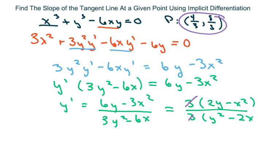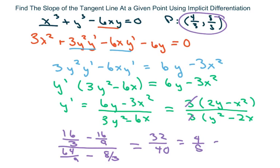So now we're going to evaluate these points. So at 4 thirds and 8 thirds, we're going to have 16 over 3 minus 16 over 9 divided by 64 over 9 minus 8 over 3. And that's going to equal 32 over 40, which equals 4 fifths. And that is your slope of the tangent line.